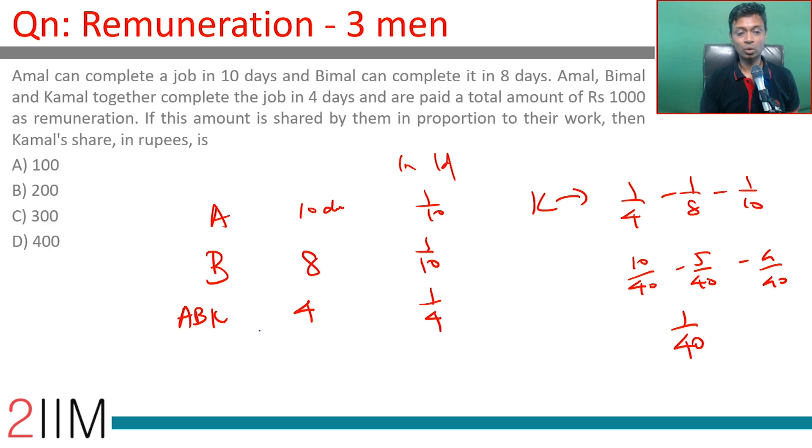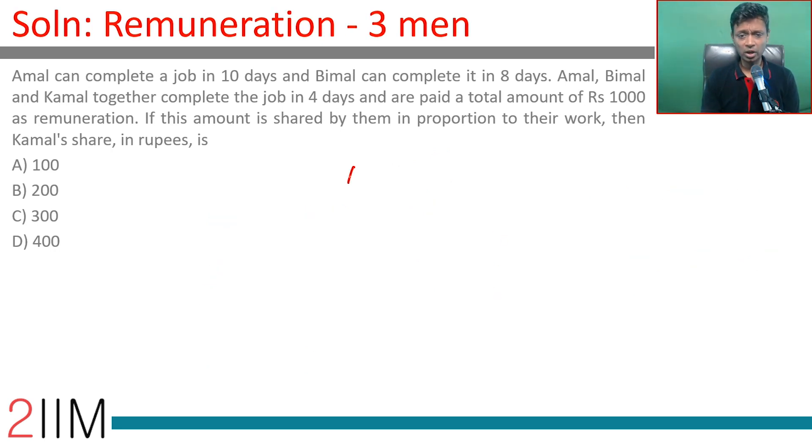So Kamal will take 40 days to finish the task. They are paid a total of Rs 1000 as remuneration. The amount is shared in proportion to their work. A to B to K should be shared in the ratio 1 by 10 to 1 by 8 to 1 by 40.